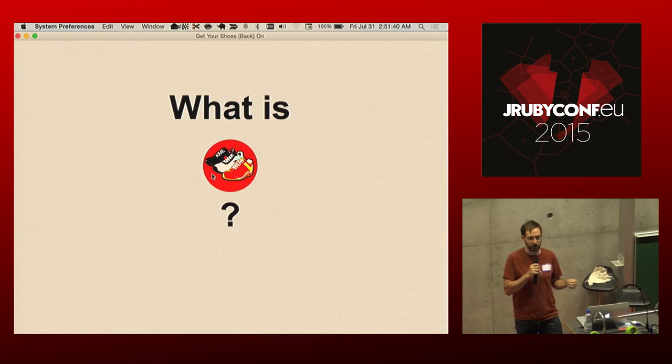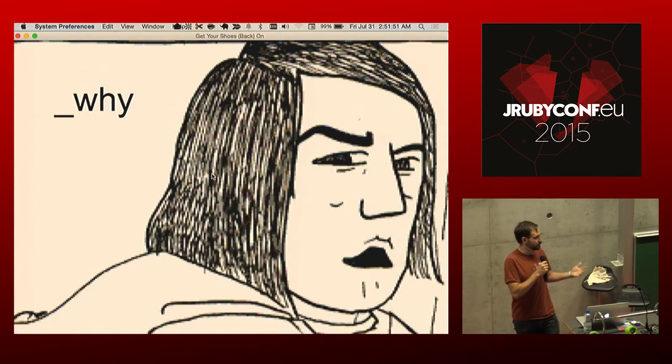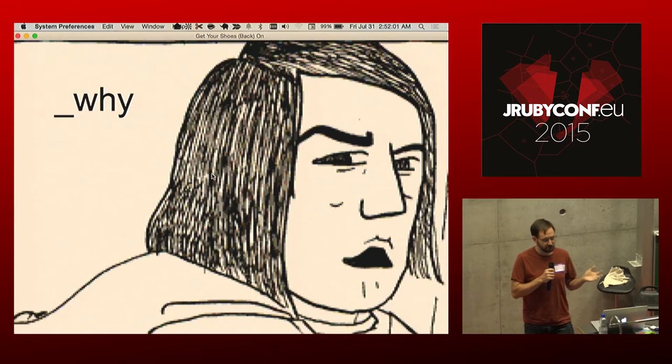This library was originally written by a guy called Why the Lucky Stiff, who those of you who have been in the Ruby community for a long time probably remember. And even some of you that haven't been might have heard of this guy. He was a really sort of enigmatic character. He did a lot of very quirky things and wrote a lot of interesting little libraries, and Shoes was kind of the largest project that he built.